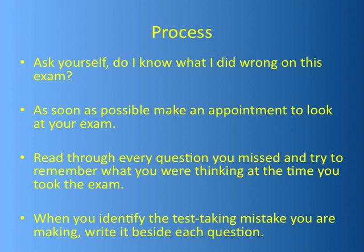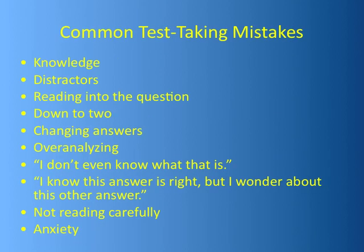When you identify the test taking mistake you were making, write it beside each question. On a 50-question exam I expect to see four or five knowledge questions, so some will be knowledge, some carelessness. Use a different color pen — maybe green or red — and write out the mistake to the side. This way when you read through the whole exam you can see, for example, if you changed your answer on six questions.